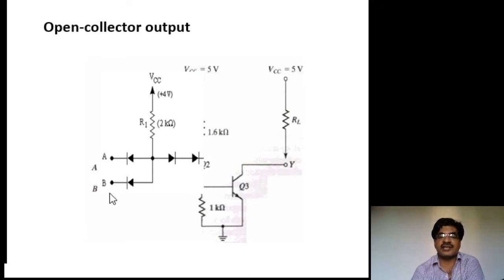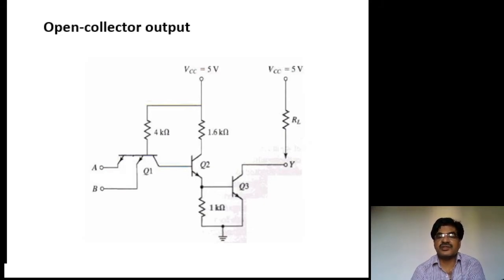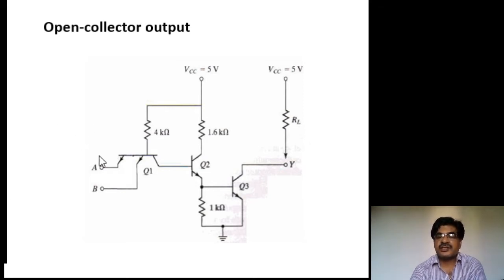This part of the circuit acts as an AND gate. These three diodes are replaced by a multi-emitter transistor. Q1 is called a multi-emitter transistor because it has two emitters. Each junction of a transistor acts as a PN junction, so instead of those three diodes we use one transistor Q1, and diode D2 is replaced by transistor Q2.